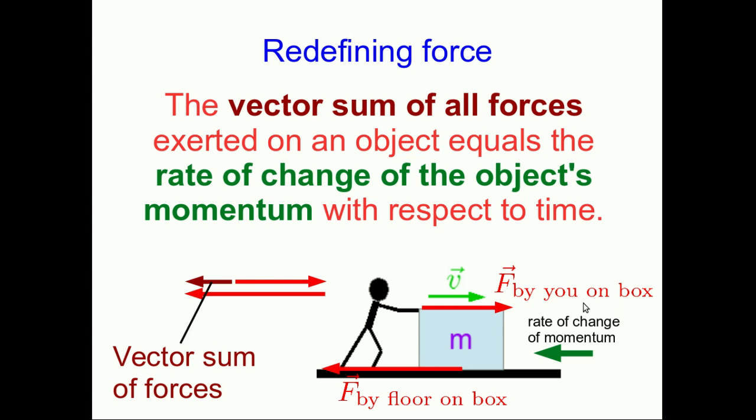What this shows us is that our definition of force as the rate of change of the object's momentum isn't quite good enough. It's fine when there's only one force acting on the object that matters. But as soon as there's more than one, we need the vector sum of the forces, not just one force. Our definition is that the vector sum of all forces exerted on an object equals the rate of change of the object's momentum with respect to time. In most situations, objects have more than one force acting on them.